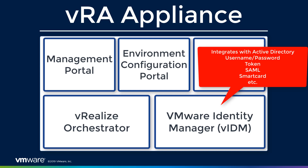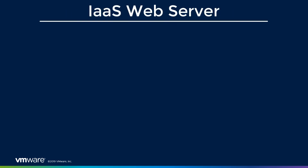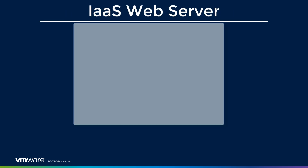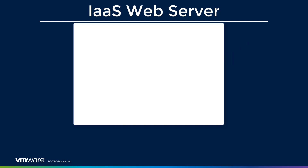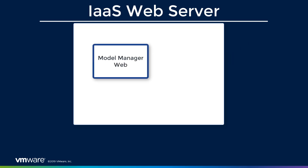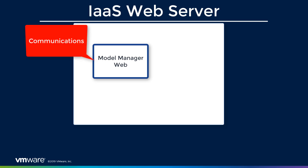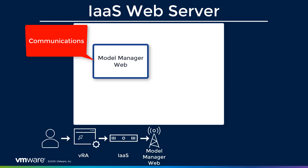Our next major piece in the environment is our IaaS web server. This is running on a Windows server with IIS. Inside of our IaaS server, we have our Model Manager Web. Our Model Manager Web handles the communications. When we request a VM to be created, it goes to VRA, which passes it off to IaaS, which passes it off to our Model Manager Web. And our Model Manager Web knows who to talk to next to get the work accomplished.